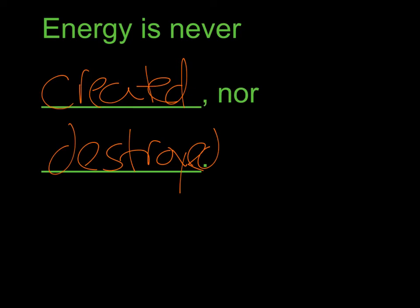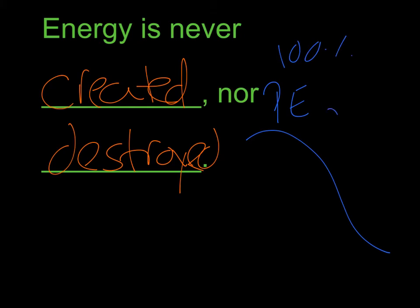So for example, when we were looking at potential and kinetic energy, we had our roller coaster and we saw that the potential energy at the very top didn't just disappear. But as it went down, it changed completely into kinetic energy, and then it goes up and it changes back into potential, and it keeps going back and forth. That's what energy does.